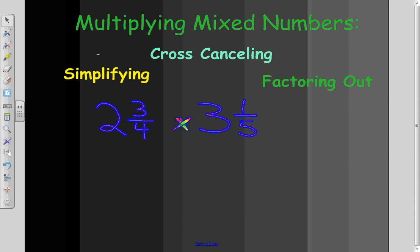The first thing we need to do, we have 2 and 3 fourths times 3 and 1 fifth. We need to convert our mixed numbers, 2 and 3 fourths and 3 and 1 fifth, into improper fractions.